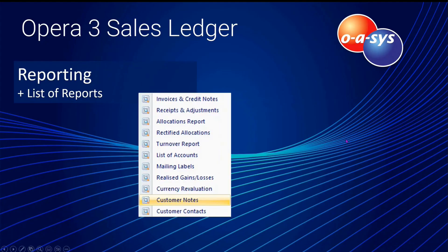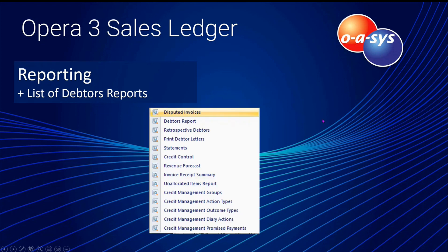There are several reporting sections in the sales ledger. The normal reports section includes invoice and credit note lists, receipts and adjustments, allocations report, rectified allocations, turnover report, and list of accounts. The debtors reports section covers disputed invoices, the debtors report, retrospective debtors report, print debtors letters for those not using credit management, statements, credit goal report, and credit control report.